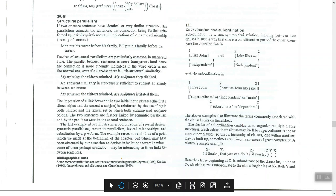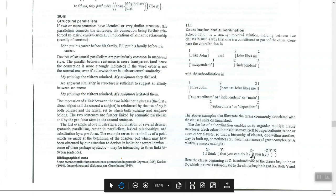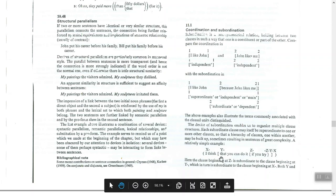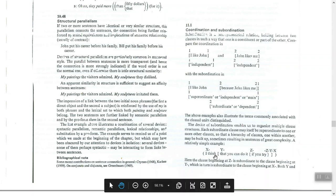If we want to analyze 'I think that you can do it if you try,' how many clauses do we have? We have: 'I think,' 'that you can do it,' and 'if you try.' What is the main, independent clause, and what are the minor or dependent clauses? 'If you try' is dependent. 'That you can do it' is also dependent — it is minor and needs support. A subordinate clause may itself be superordinate to one or more other clauses, giving us a hierarchy.